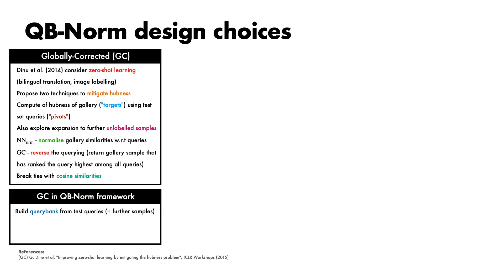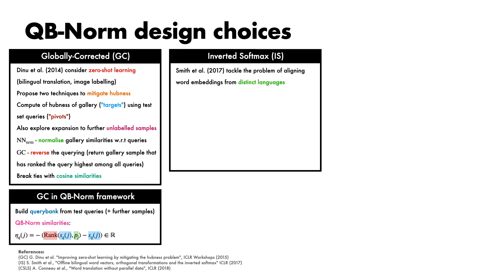We can interpret the GC approach in the QbNorm framework by building the query bank from test queries, and optionally adding further samples from the training set. We then compute QbNorm similarities as follows, where the rank function returns the rank of the first argument — the raw similarity from query Q to gallery sample j — with respect to the array of elements in the second argument, which is the probe vector for gallery sample j. The trailing term subtracts the raw similarity from the result to break ties.